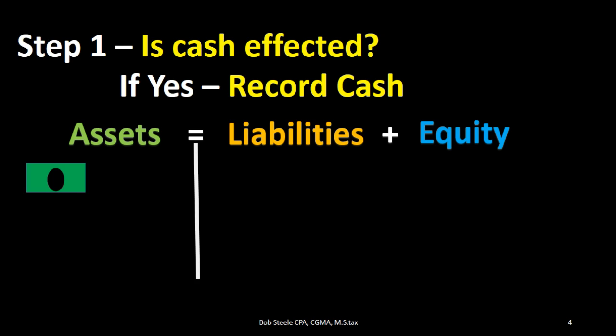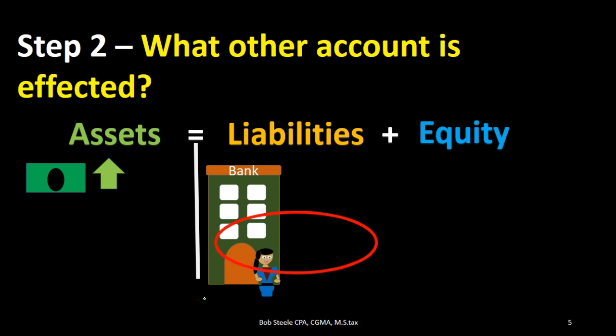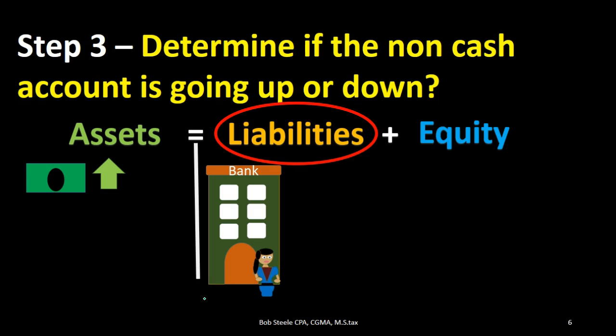Let's deal with what we know and then move on to what might be a little bit more difficult. If cash is affected, we're going to say: is cash going up or down? We're going to assume in this case cash is going up. Step two: what other account is affected? So if we know that cash is going up on this side, we have to determine what else is happening. For example, let's say we have a bank loan — we can say liabilities will be the other type of account that will be affected.